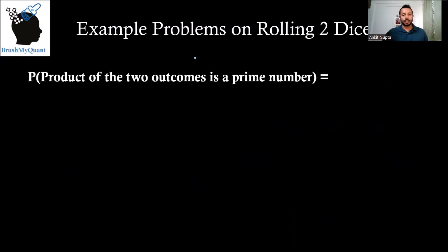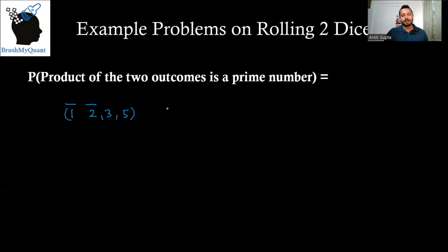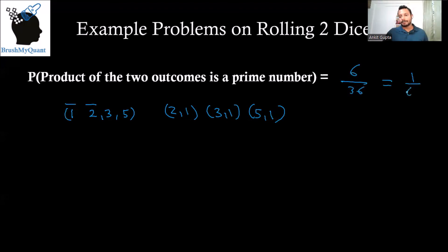What is the probability that the product of the two outcomes is a prime number? For the product to be prime, one of them must be one and the other must be prime. So we can get one comma two, one comma three, one comma five, two comma one, three comma one, and five comma one — six favorable outcomes out of 36, making the probability one by six.